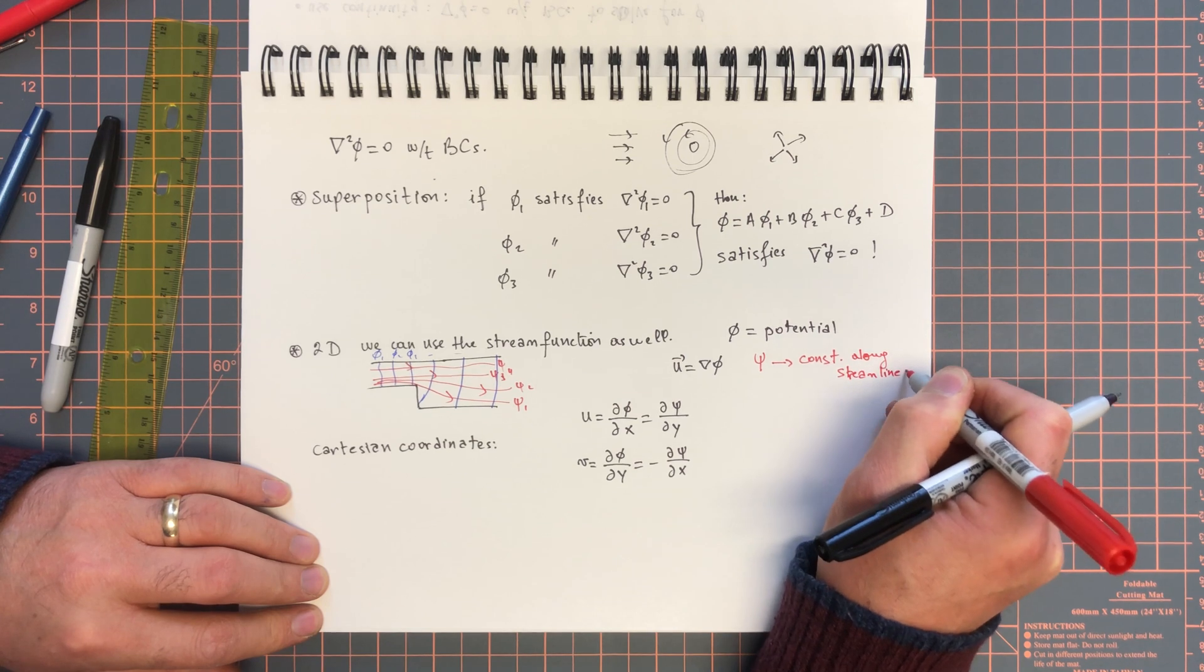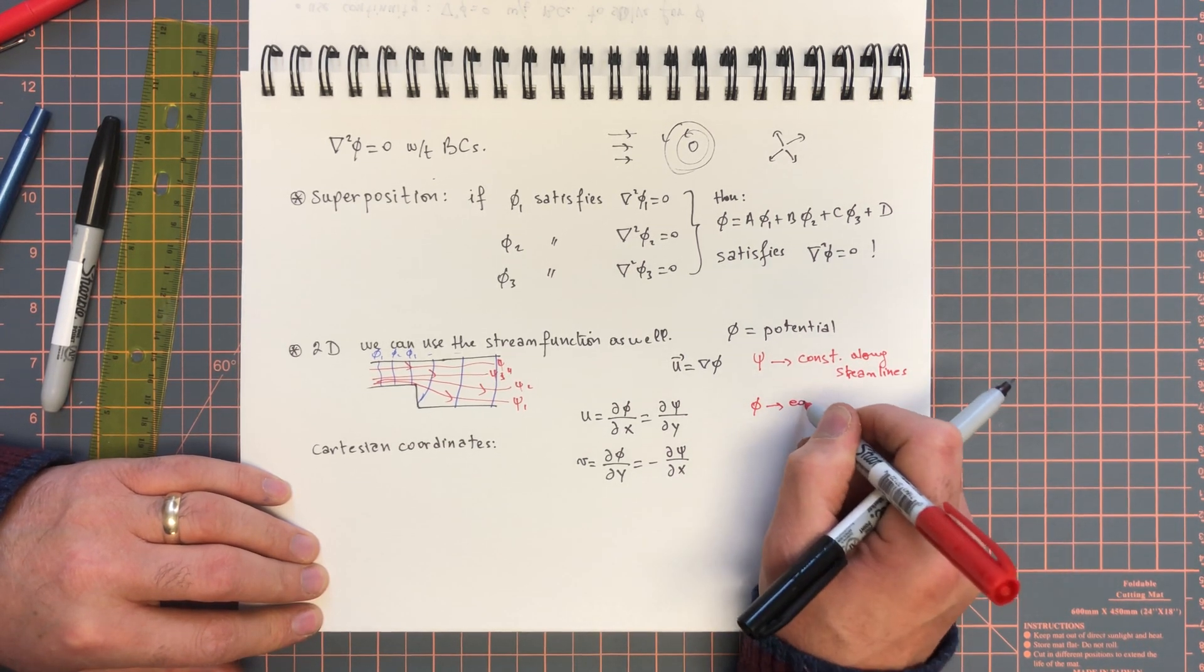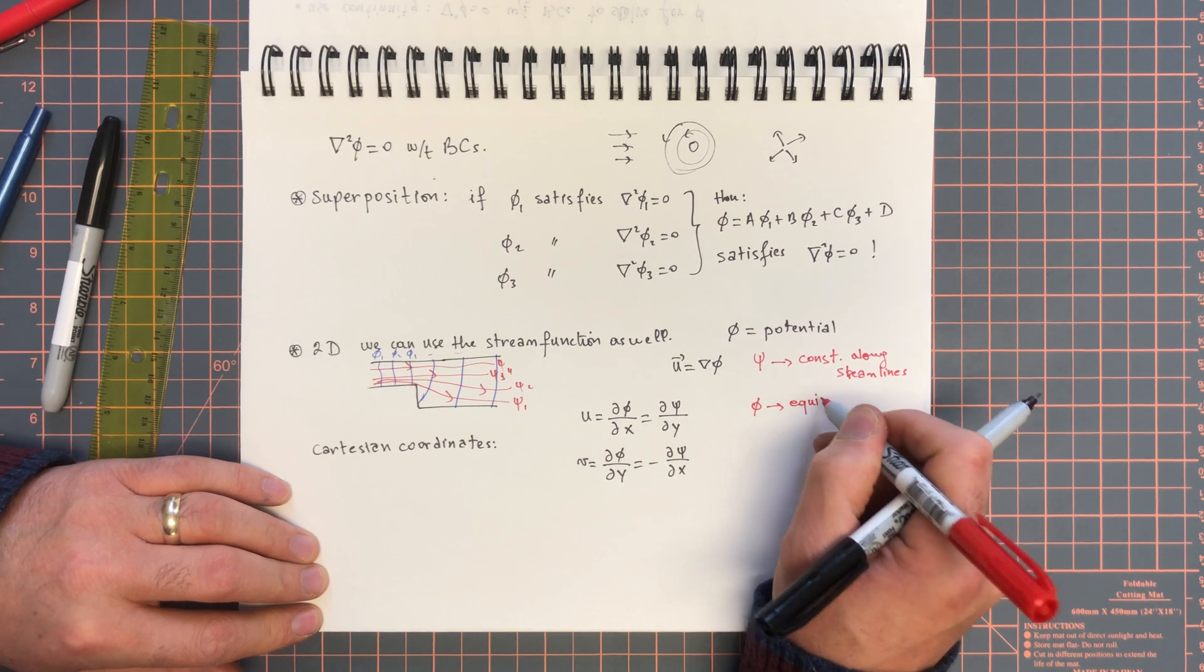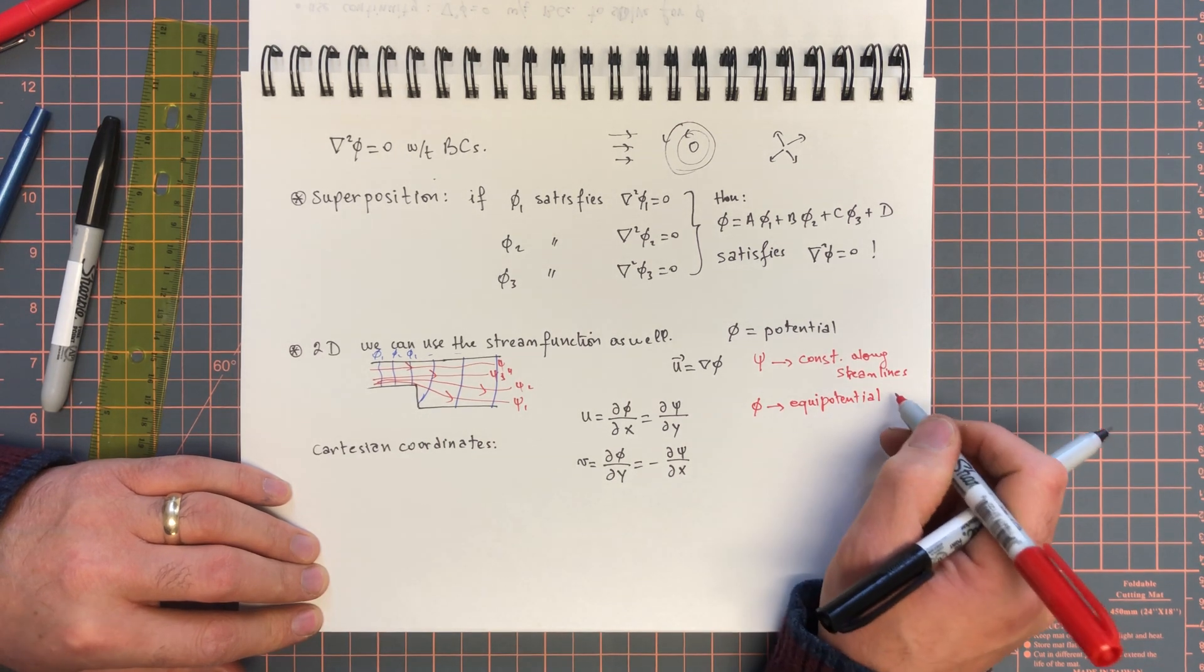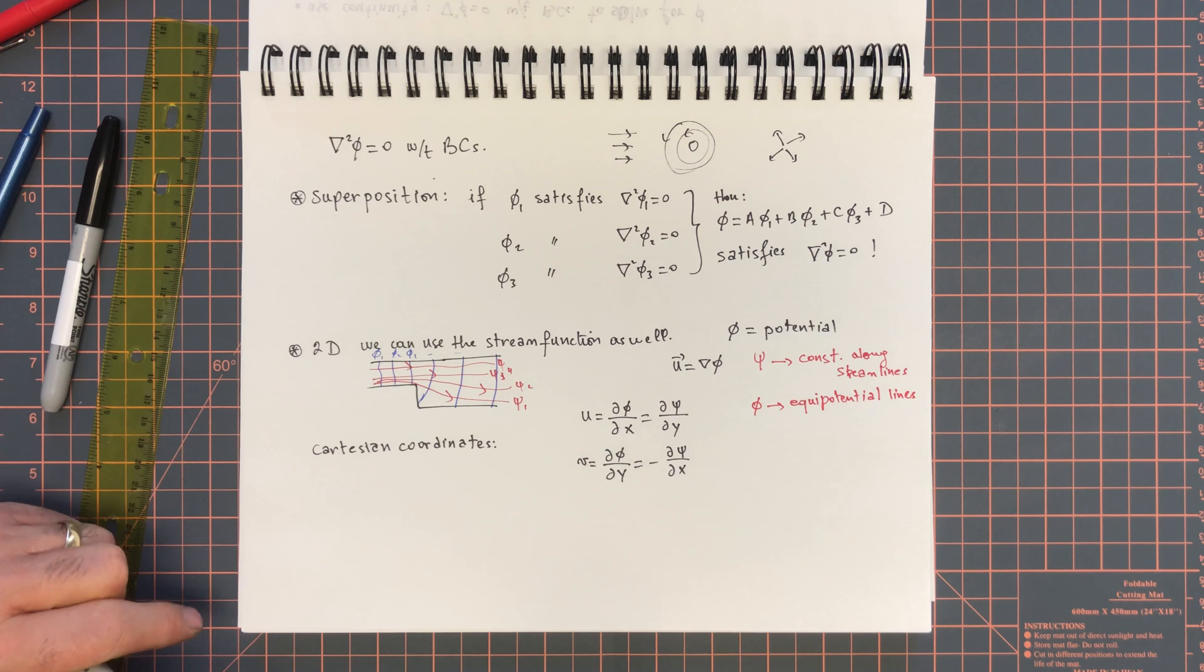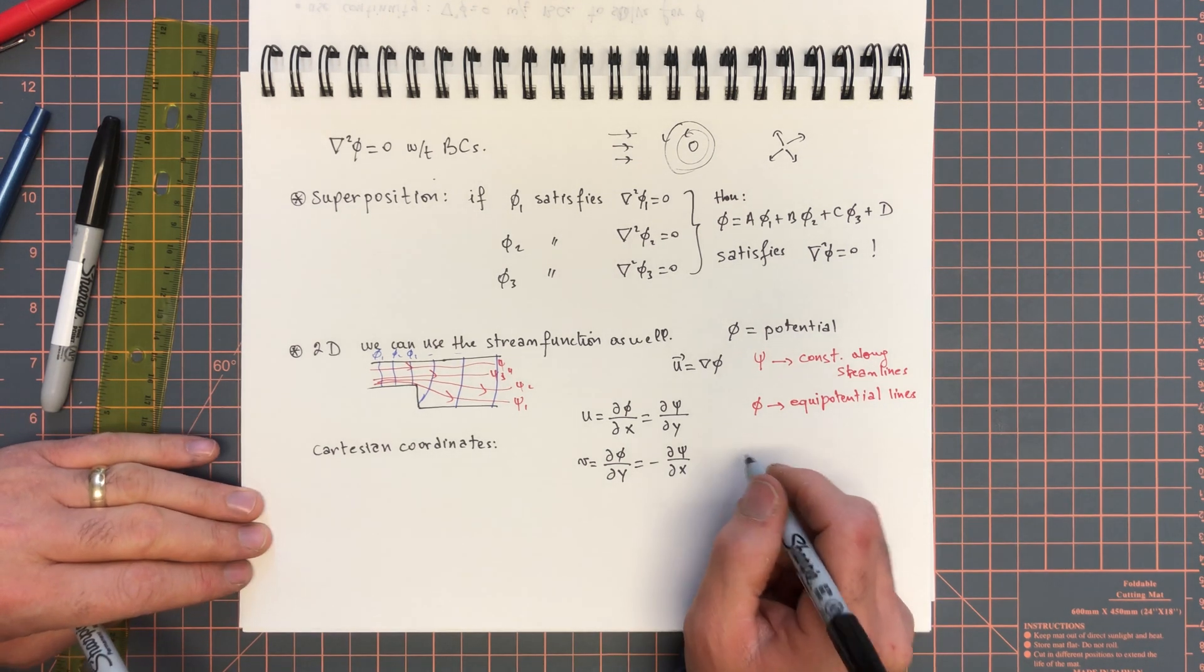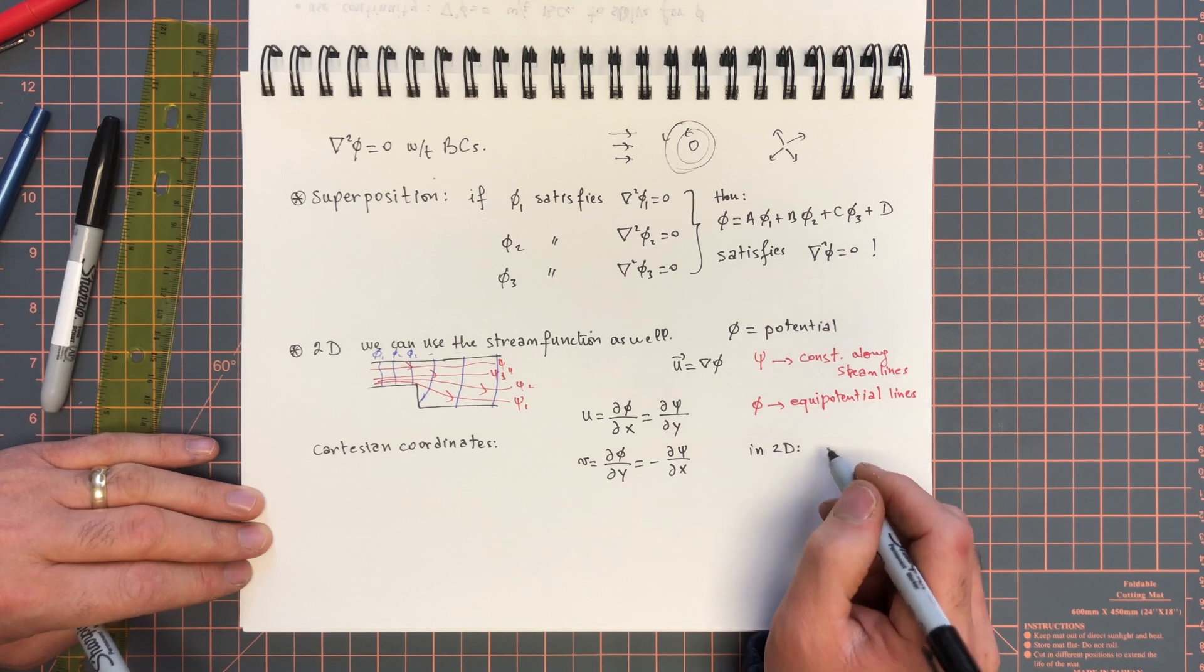We call psi constant streamlines, constant along streamlines. Streamlines, that's why it's called the stream function. And phi, we call that the, it produces equipotential lines. Lines of equal potential. But, in 2D, and that's only in 2D, phi is perpendicular to psi.